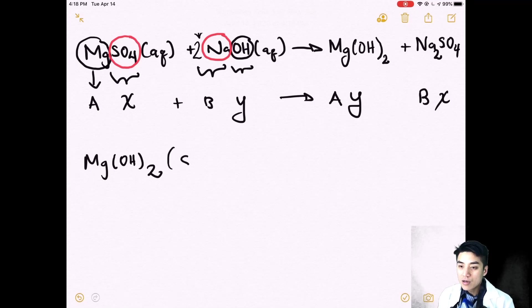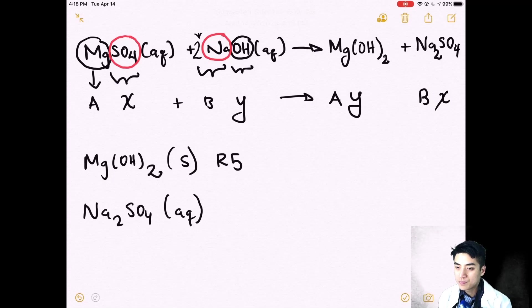Now magnesium hydroxide is our solid. That's our precipitate, and this is by rule five. Sodium sulfate is aqueous. These are the spectator ions by rule four. Let's look at them in depth.